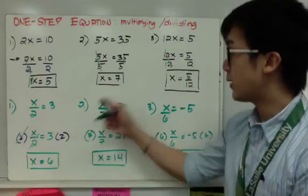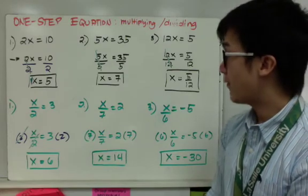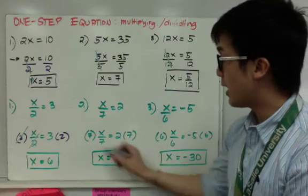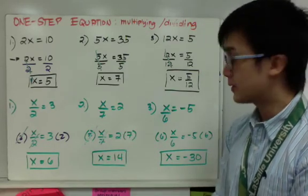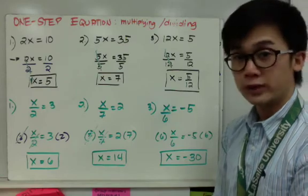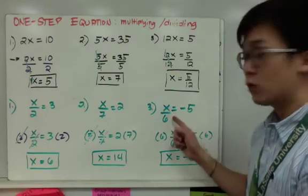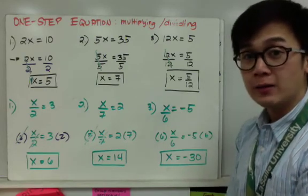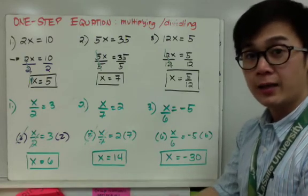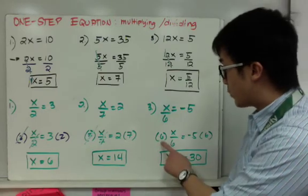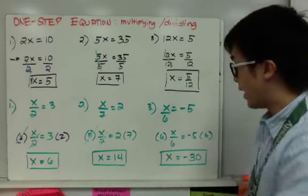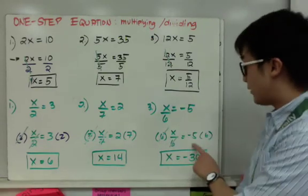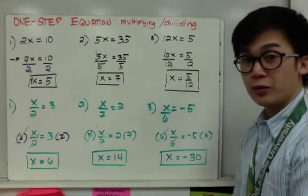For the last example, x over 6 equals negative 5: multiply both sides by positive 6. The x is by itself, and negative 5 times 6 equals negative 30. Remember your rules for multiplying signed numbers when solving these types of equations.